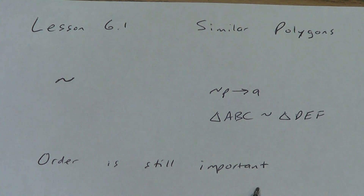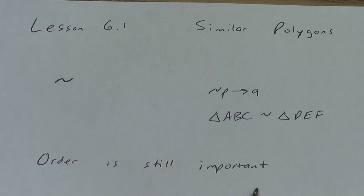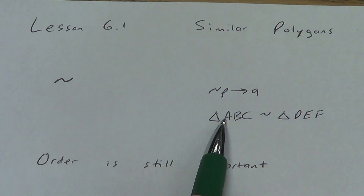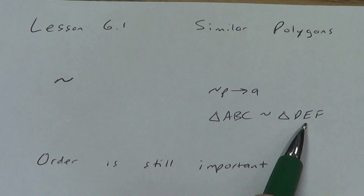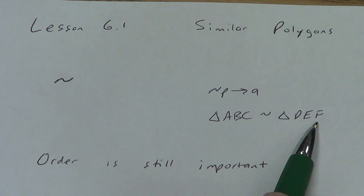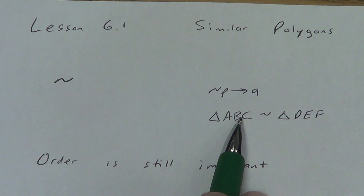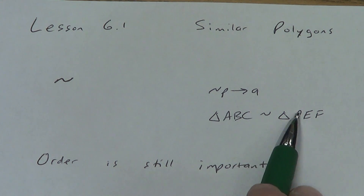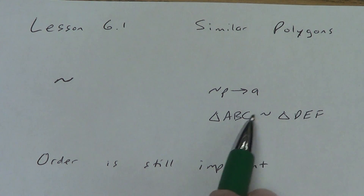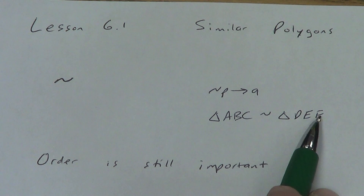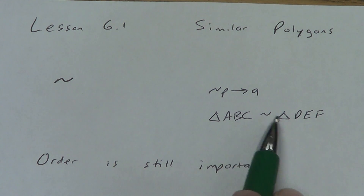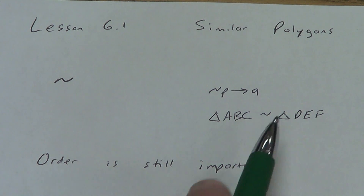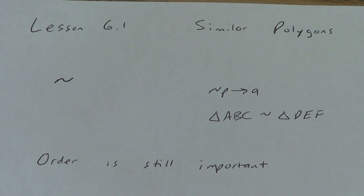Order is still important. Remember when we named congruent shapes and the order was important? It's going to be important when we name similar shapes. So A has to match with D, B has to match with E, C has to match up with F. Side AB has to match with side DE, side BC has to match with side EF, and side AC has to match with side DF. So that order there is still important as well.